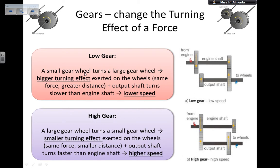A small gear wheel turns a large gear wheel. So here it is, this one turns that one. And this gives a bigger turning effect that is going to be exerted on the wheels because you have the same force applied but a greater distance. So here the distance is small, but here the distance is greater. So because you have the same force but a greater distance, the output shaft turns slower than the engine shaft, and this gives you a lower speed in a car.